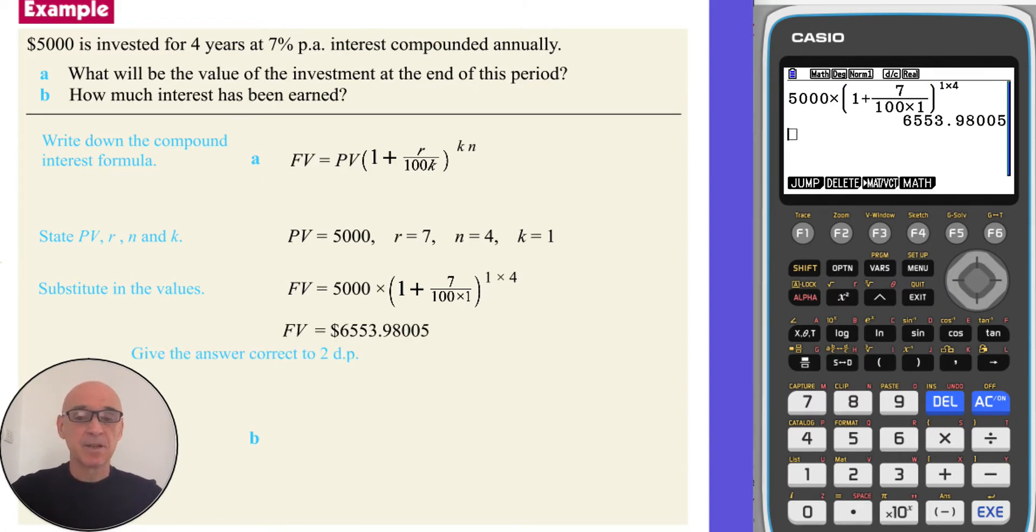And as it's money, we should round our answer correct to two decimal places. So the investment will amount to $6,553.98.